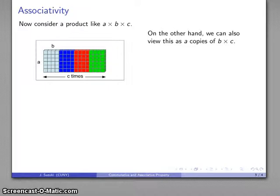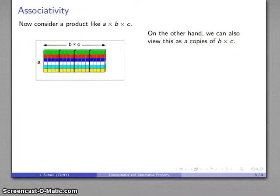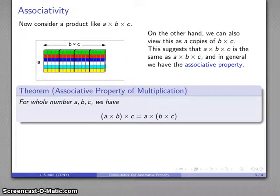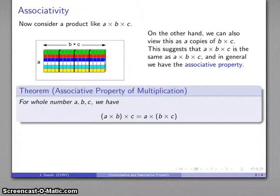On the other hand, I can also read this as A copies of this. Well, this is C copies of B, or otherwise known as B copies of C, B times C, again by commutativity. So I can read this in a slightly different way. And what that tells me is that A times B times C is the same as A times B times C.